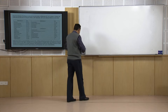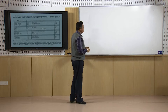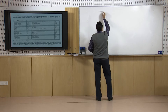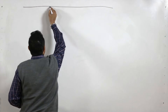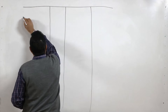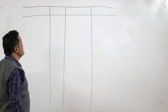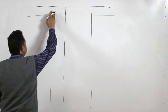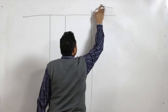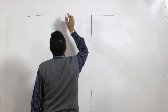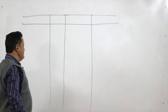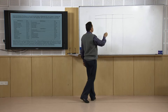Now let us learn how to prepare the financial statements taking into account the adjustments. These financial statements are: first, the trading and profit and loss account; second, the balance sheet; and third, the cash flow statement, which we will learn later. We will now learn how to prepare the first financial statement — the trading and profit and loss account.